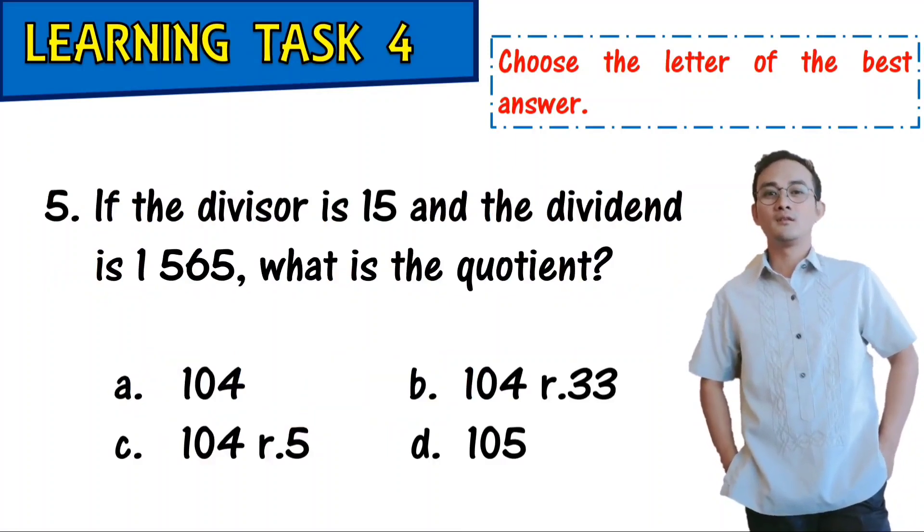If the divisor is 50 and the dividend is 1,565, what is the quotient? A, 104. B, 104, remainder 33. C, 104, remainder 5. And D, 105.